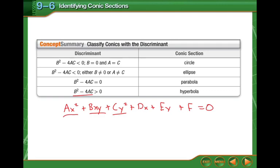You're going to use those with the discriminant to figure out what type of conic section we have. So when it's a circle, the discriminant is less than zero and B equals zero and A equals C. It has to be that way in order to be a circle.